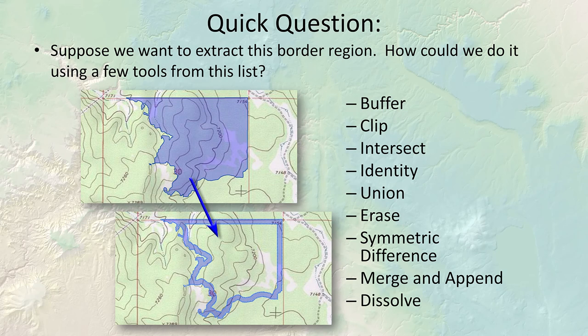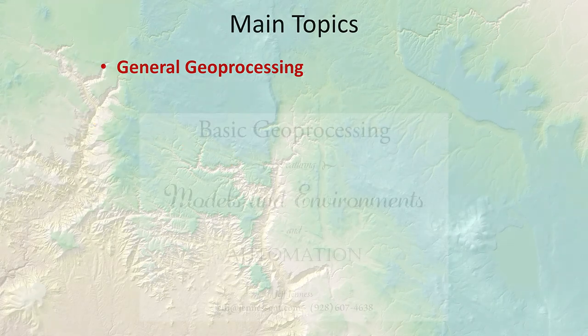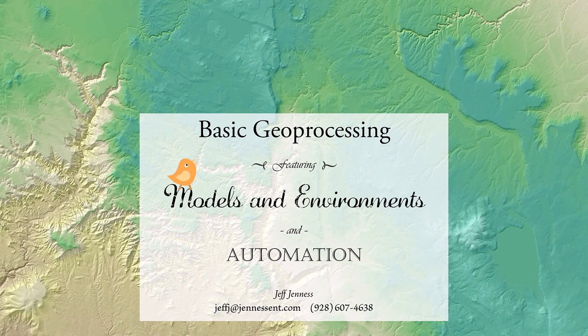The answer to the pop quiz — getting the border region within 50 meters of a stand boundary — involves calculating an internal buffer on the stand polygon, then using the erase tool to delete that internal buffer from the original stand polygon. That covers the basic geoprocessing tools. Next lecture will cover environments, which are optional parameters that can alter how a tool behaves, and later we'll get into Model Builder and Python.